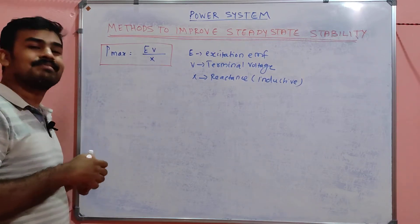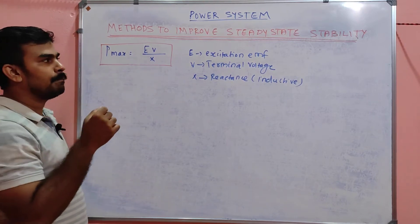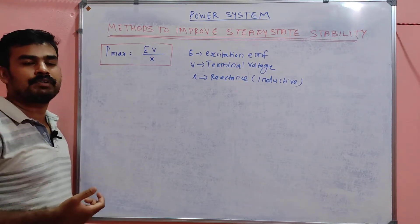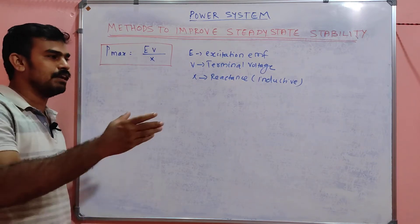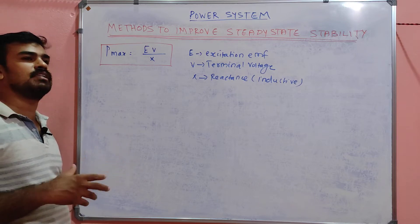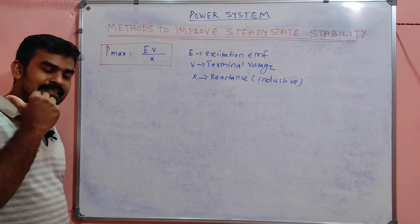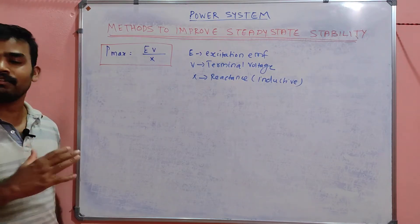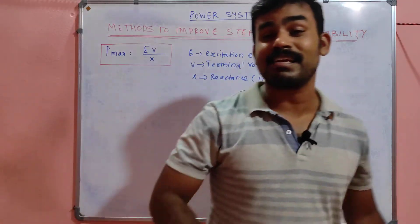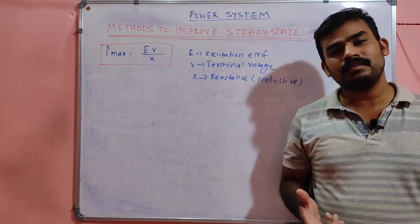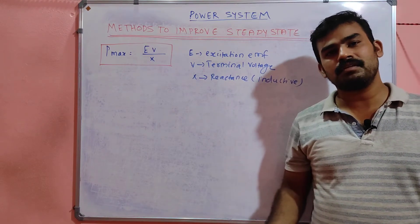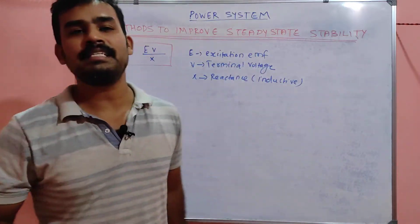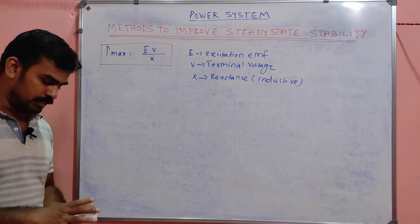Disturbances occur in the maximum power or power carrying capability of a transmission line. The disturbances are not in the alternator — normally the alternator is always at its right specification. Disturbances are normally occurring in the transmission line or load side. For the alternator, the speed is constant, fuel injection is constant, and frequency is almost constant, so faults at the generator or alternator side are very rare.